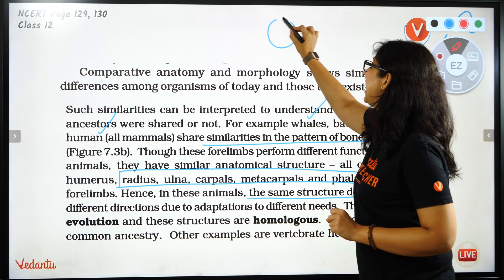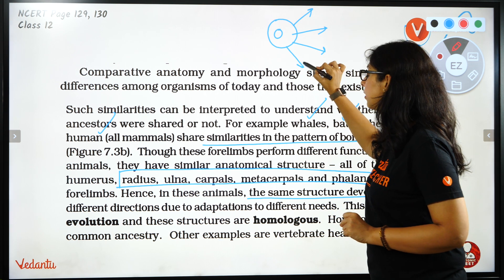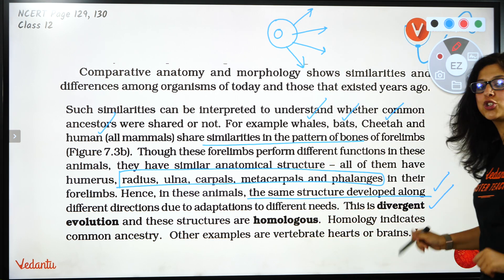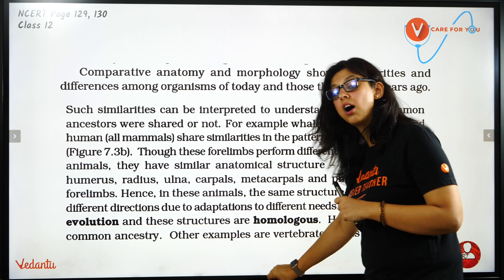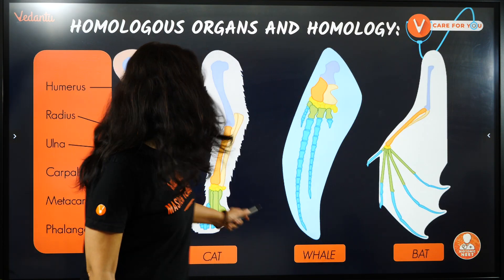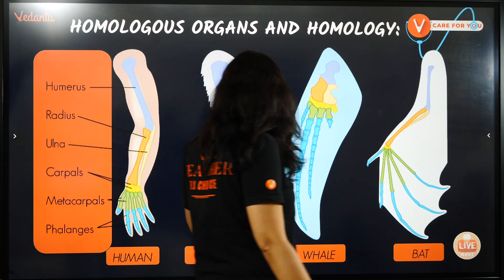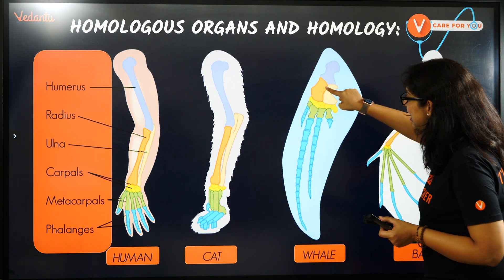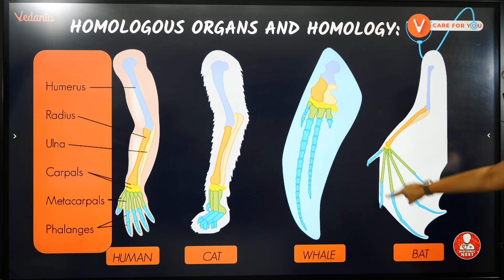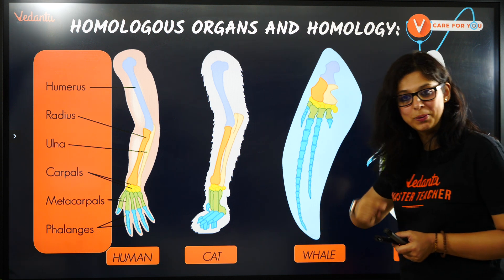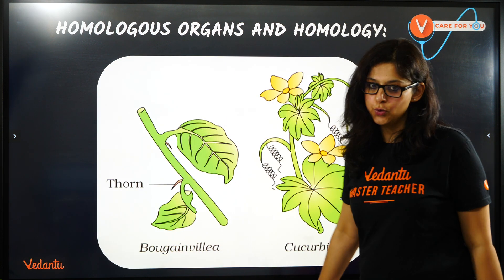Because the origin is one and functions are different, these are called Homologous Organs and this represents Divergent Evolution. Other examples are vertebrate hearts and brains. Looking at the diagram: humerus, radius, carpal, metacarpal, and phalanges — the same bones are seen in whale, cat, and human. Same structure, different functions — that is Divergent Evolution.